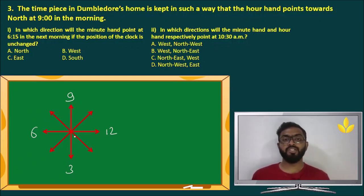Question number 1. In which direction will the minute hand point at 6.15 next morning, if the position is unchanged? At any 15, the minute hand points at 3. 3 is over here. And that is nothing but south. Answer is delta.